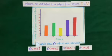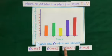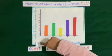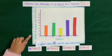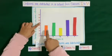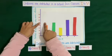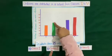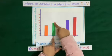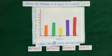Next question: in which class were 25 uniforms distributed? Looking at the vertical axis for the number of children who received uniforms, we find number 25. The class that received 25 uniforms is class 2nd. So our answer is B, class 2nd.